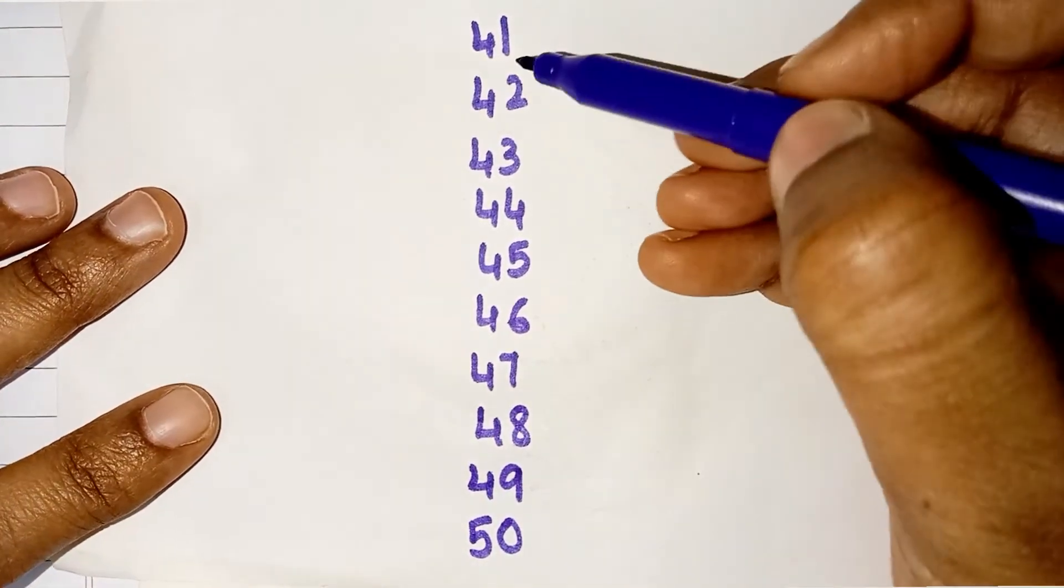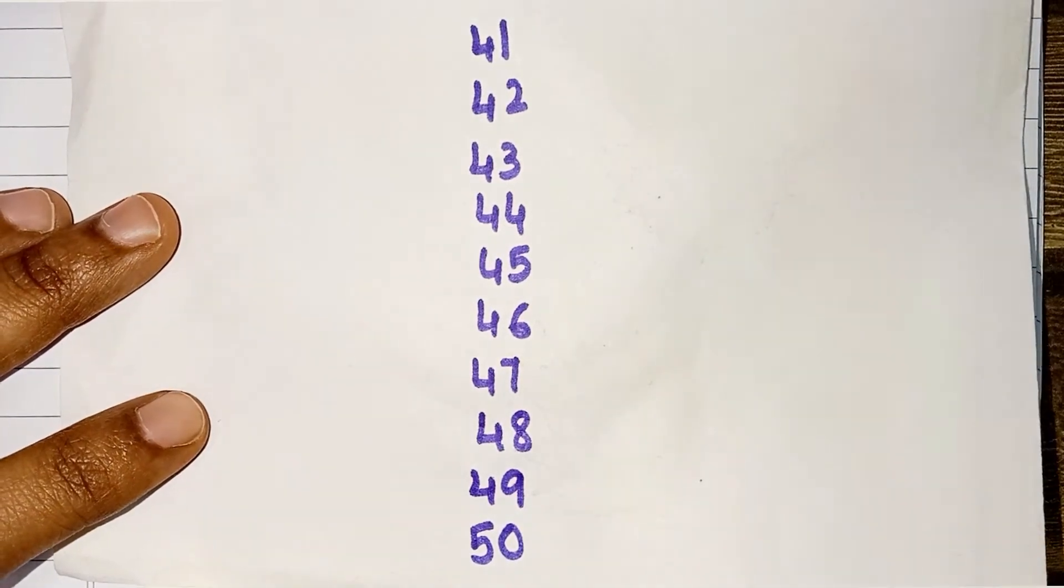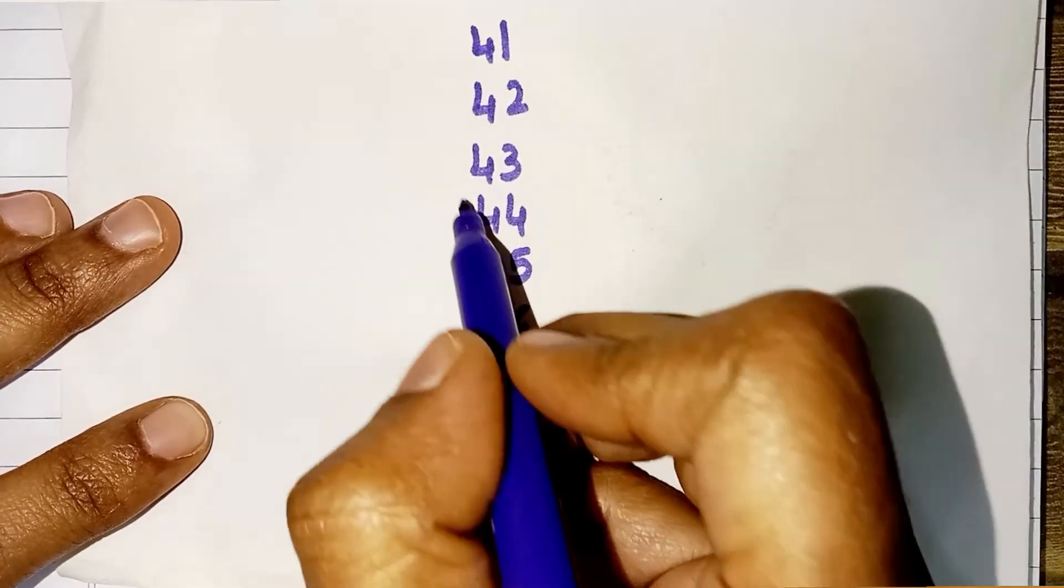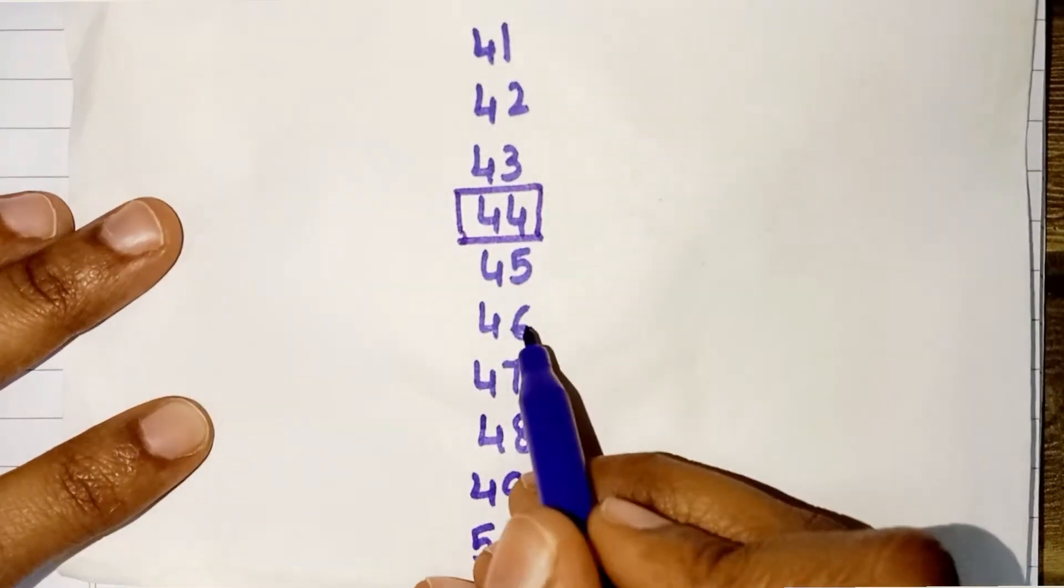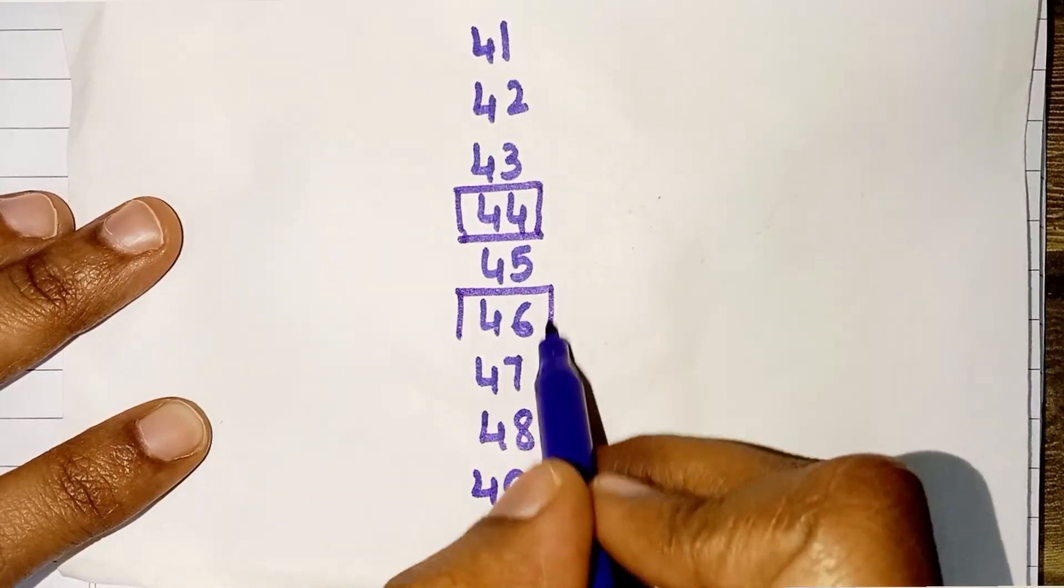So, what number comes before 45? It is 44. What number comes after 45? It is 46.